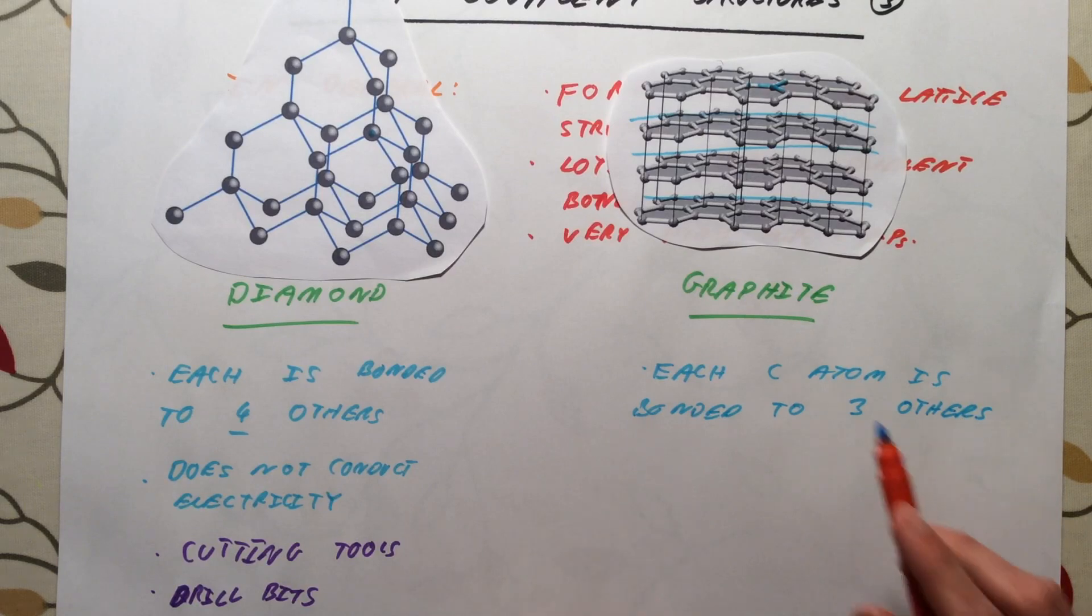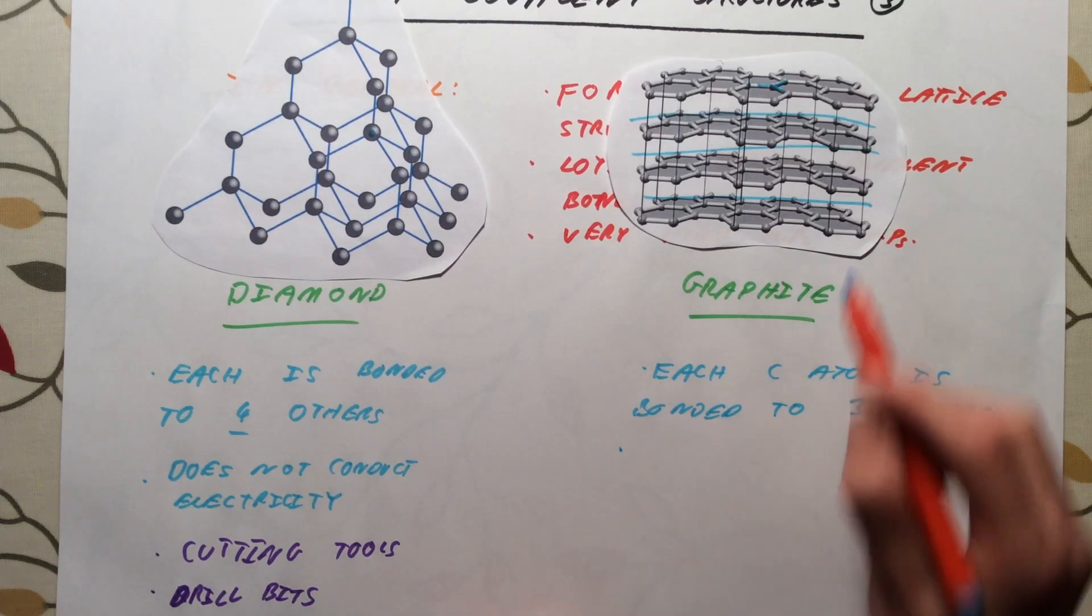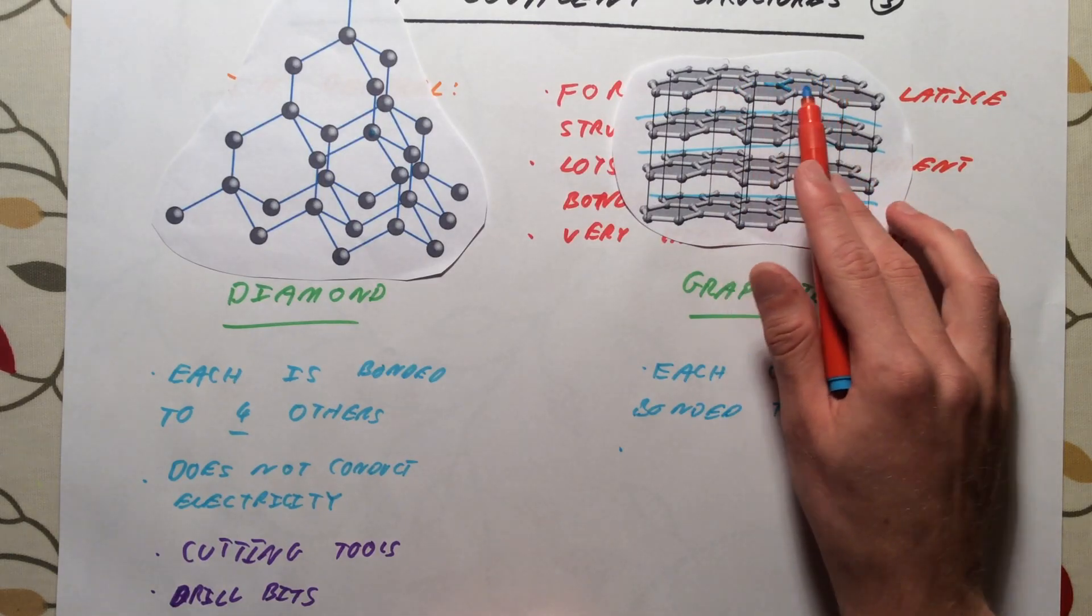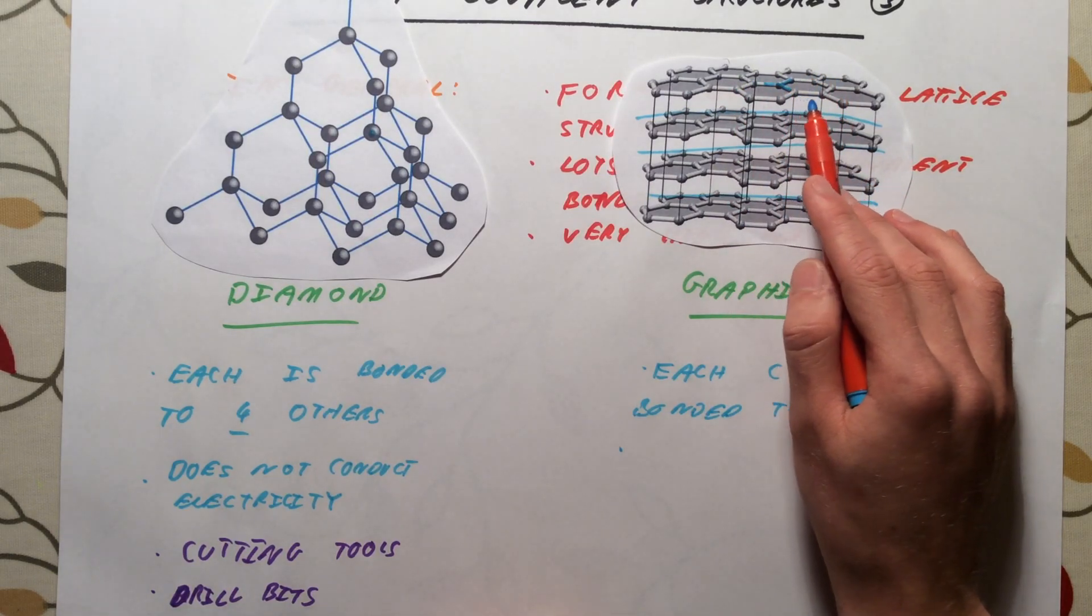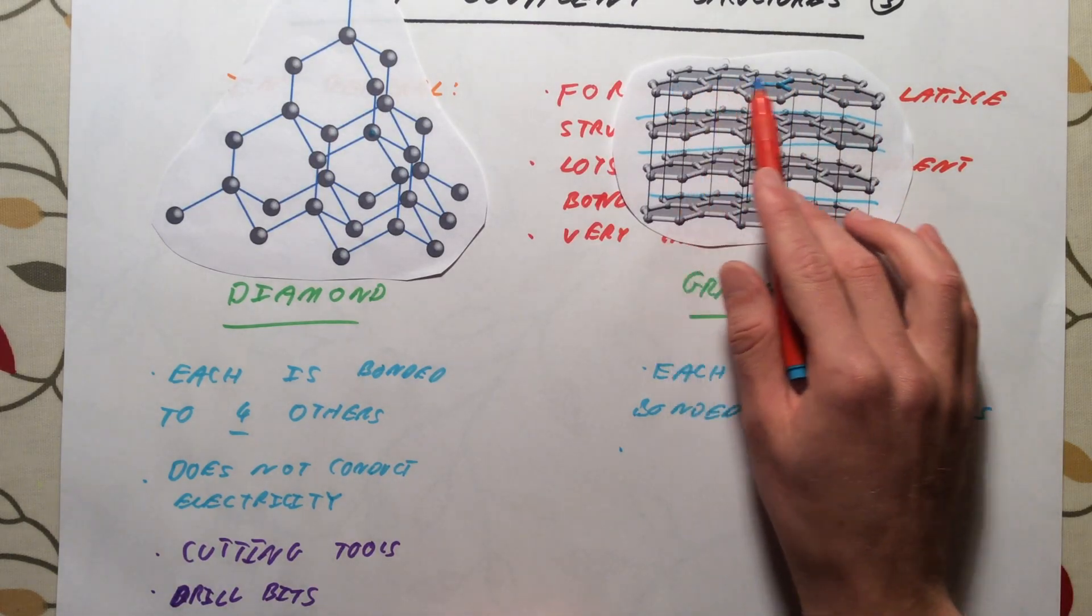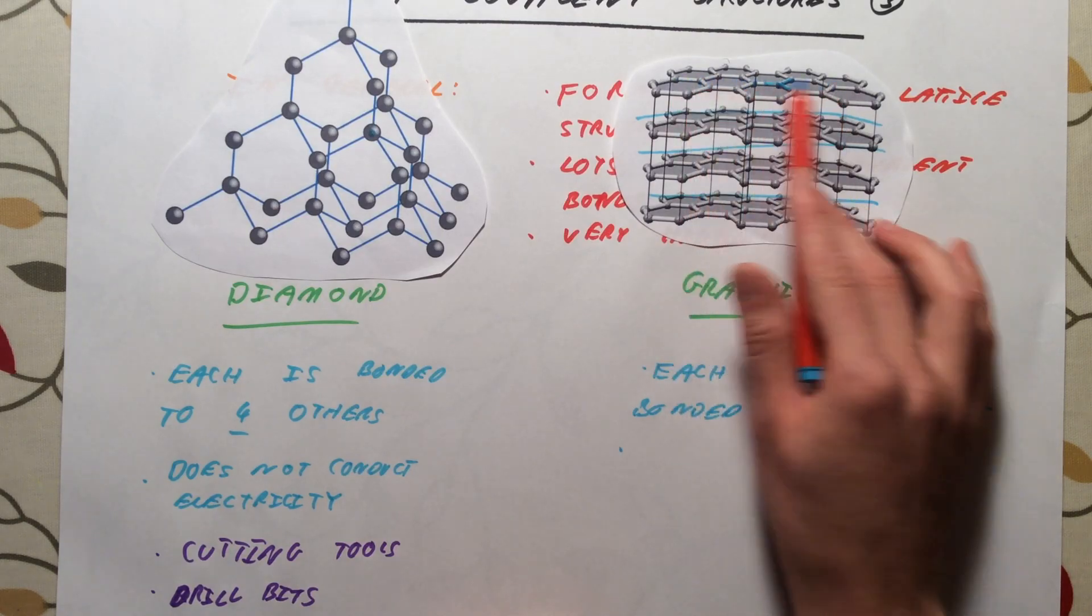So each carbon atom is bonded to three others. Now because each carbon has only got three bonds, not four, we actually get these flat layers or sheets of carbon atoms.